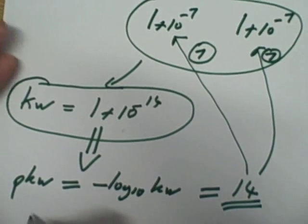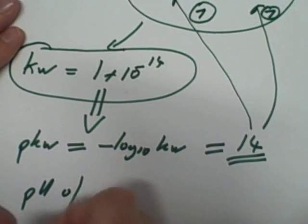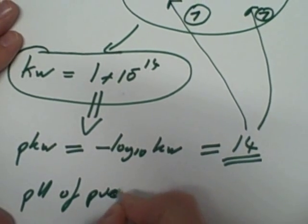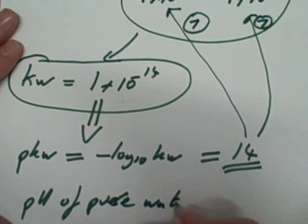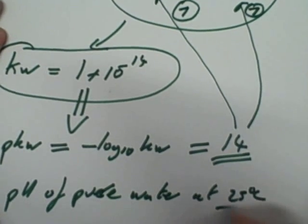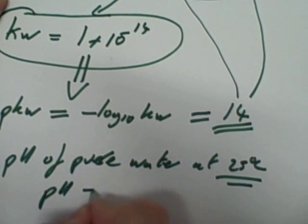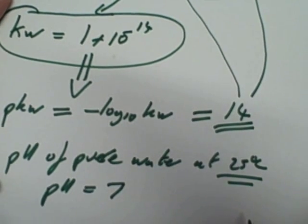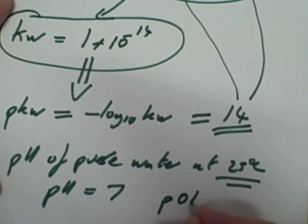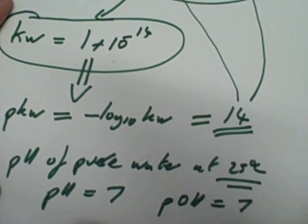And this is one of the reasons why, when you're dealing with the pH of pure water, at 25 degrees Celsius, that's quite important, the pH, everybody knows, is 7. But that also means that the pOH will also be 7.